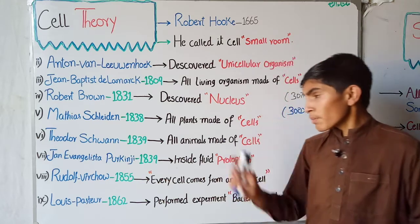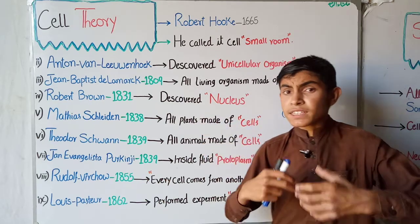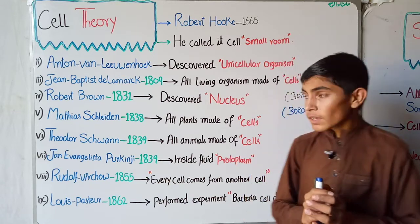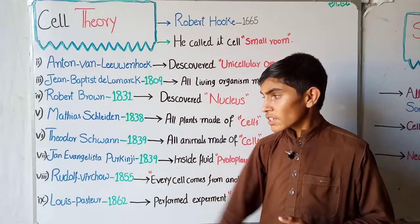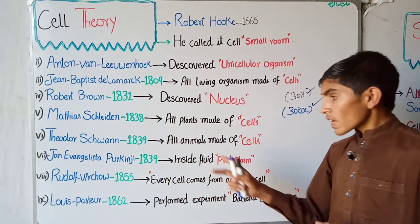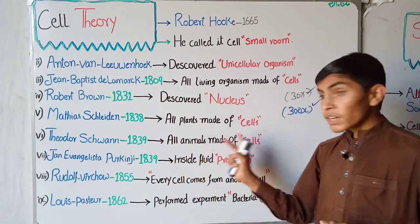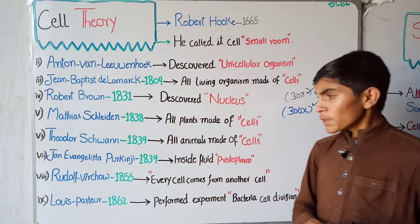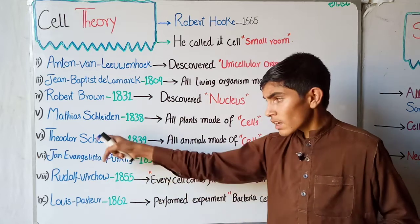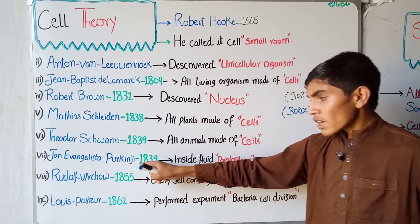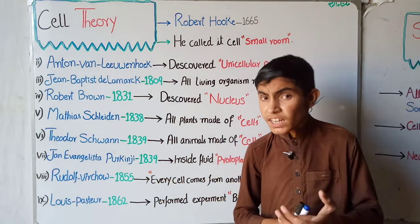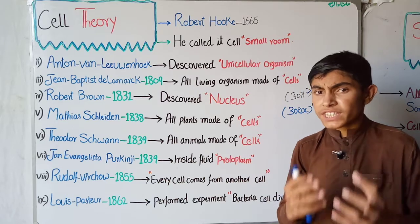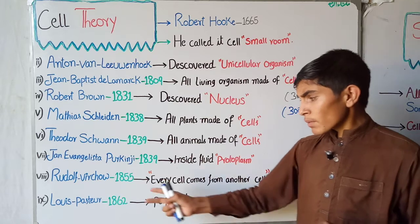After Robert Brown, Matthias Schleiden came in 1839. He was a German botanist who performed his experiments under a microscope on plant bodies and discovered that all plants are made of cells. Then, around the same year, another German scientist, Theodor Schwann, focused on the animal side and said that the animal body is also made of cells. Around that same period, another scientist proposed that inside the cell there is a fluid-like structure called protoplasm.